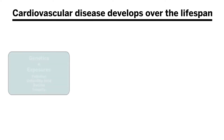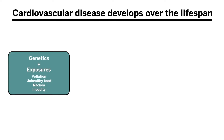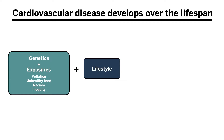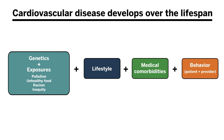Cardiovascular disease develops across the lifespan. One schema we can use to consider this is the summation of risk across key fields like genetics or inherited risk; ambient and structural exposures such as pollution, unhealthy food, racism, and inequity; lifestyle factors like diet, exercise, sleep, and stress management; medical comorbidities such as diabetes, obesity, and hypertension; and behavior on both the patient side in lifestyle interventions and the provider side in problems like therapeutic inertia or unconscious bias.